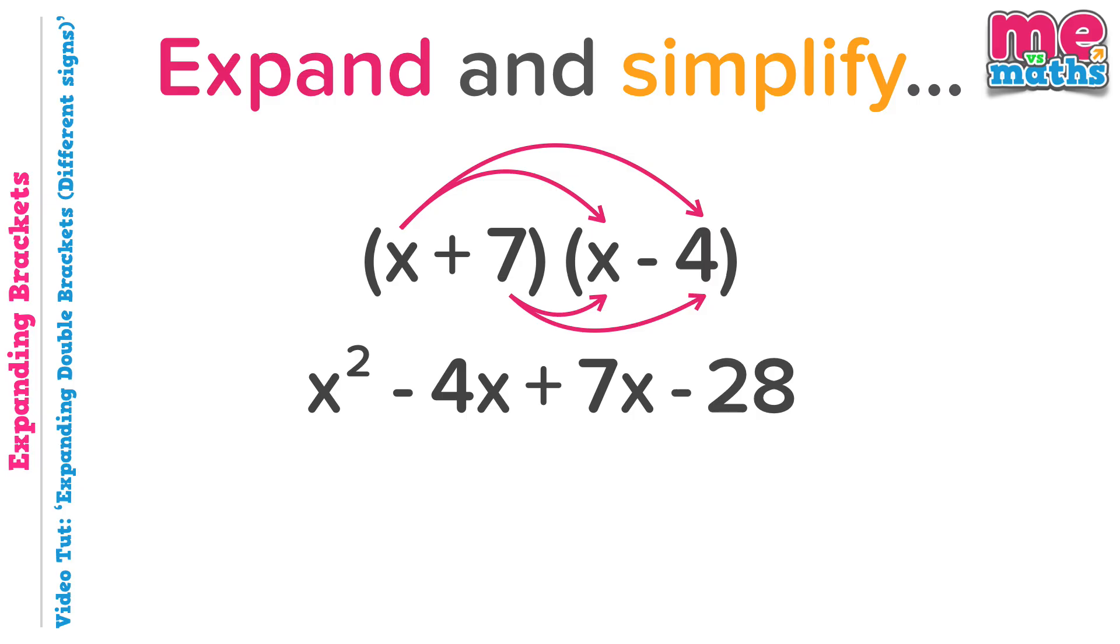We've successfully expanded our bracket and now we need to simplify our result, particularly those x's in the middle. Minus 4x plus 7x. If we start 4 below 0 and move up 7, we'll go into the positives. In fact, we'll get to positive 3. So these parts in the middle can be simplified to give plus 3x, which you can see there in our final answer.